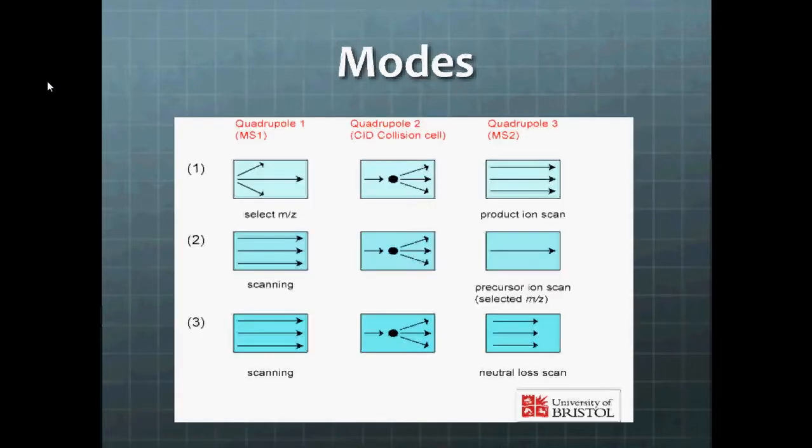And then ions will pass the third quadrupole, be filtered again, and then eventually reach the detector. Now where the triple quadrupole gets its utility and diversity and what it can do comes from the different modes that you can operate it in. The first mode is product ion scan, which is where the first quadrupole scans a selected mass to charge ratio or a few select m/z's, and those select m/z's will pass into the collision cell, fragment further, and then the third quadrupole scans a range of m/z's.